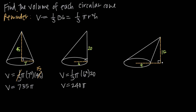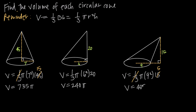We can also work with a cone where the height is given outside of the cone. Again, the important thing is the right angle indication — or 90-degree angle indication — which tells us that the height is 15 units. So volume is equal to one-third π times r squared, or 9 squared, times the height of 15. When we do 15 times one-third we get 5, so we end up with 5 times 9 squared, or 5 times 81, which is 405. So we get 405π for the volume of this cone.